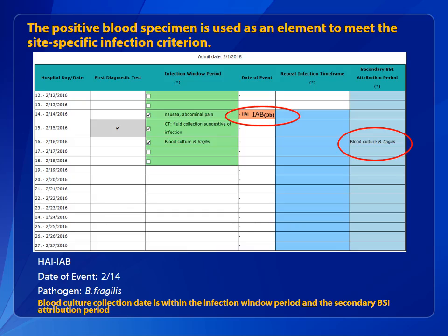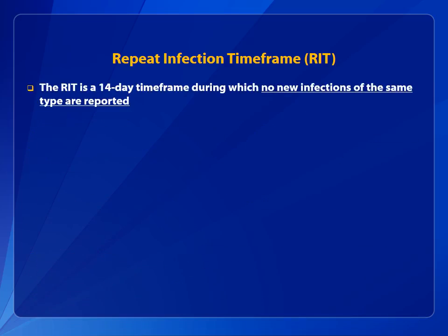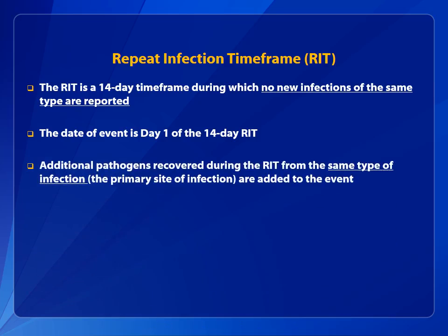These examples are the only two ways that a BSI may be considered secondary. The RIT is a 14-day time frame during which no new infections of the same type are reported. The date of event is day 1 of the 14-day RIT. Additional pathogens identified during the RIT from the same type of infection are simply added to the event — a new event is not reported.